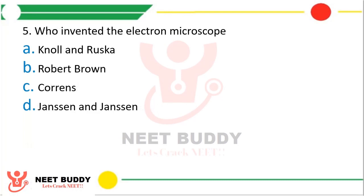Question number five. Who invented the electron microscope? Option A Knoll and Ruska, option B Robert Brown, option C Korens, or option D Jensen and Jensen. The correct answer is option A — Knoll and Ruska.